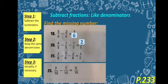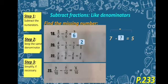Next: 7 over 8 minus what over 8 minus 2 over 8 equals 4 over 8. When we have this type of question — 7 minus what equals 5 — we just subtract 5 from 7: 7 minus 5 equals 2. So we solve: 7 minus 2 equals 5, then 5 minus 4 equals 1, so the missing number is 1. Let's check: 7 minus 1 equals 6, and 6 minus 2 equals 4. Correct! Next: 7 over 10 minus what over 10 equals 6 over 10. 7 minus 6 equals 1, so the answer is 1.